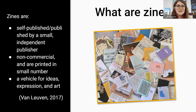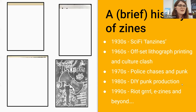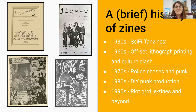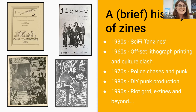Zines build connections between people and within groups and provide modes of communication in addition to information dissemination. Typically, zines are said to originate in the science fiction fan communities of the 1930s, and the name stems from the phrase 'fan magazine.' One of the first zines to be considered as such was called The Comet, and it was published by the Science Correspondence Club in Chicago, Illinois, from 1930 to 1933.